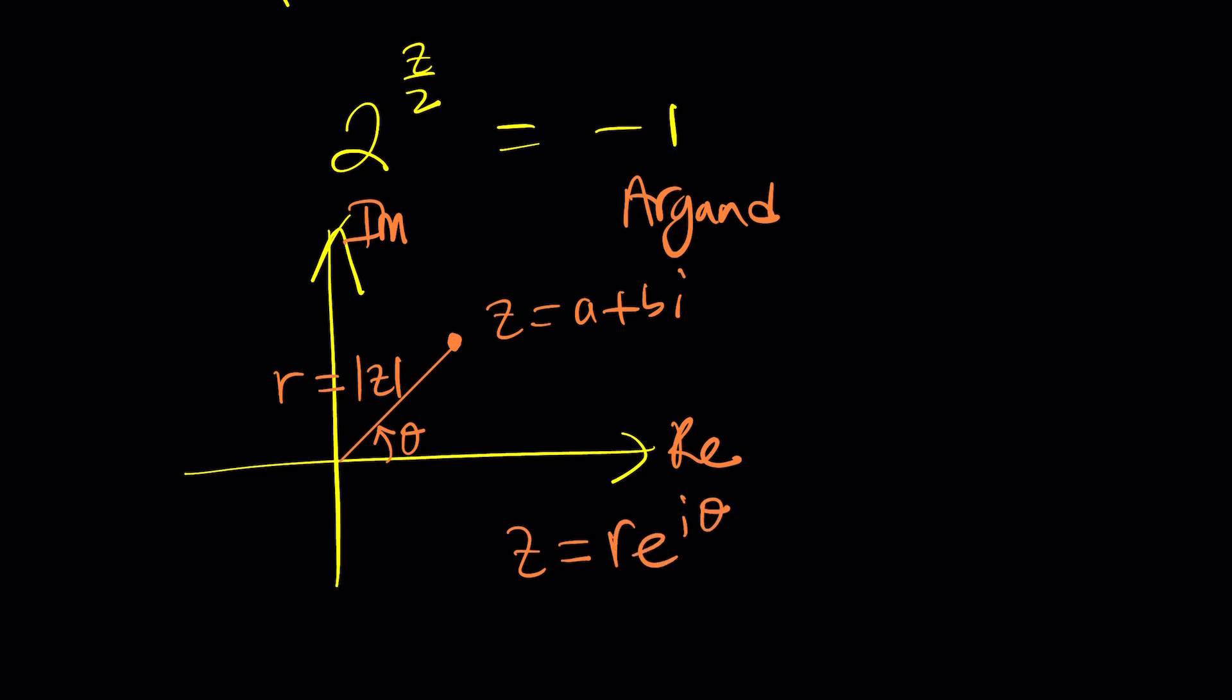Again r is the modulus or the absolute value and theta is the argument. So you need to have two pieces of information. But how do you graph or plot z equals a plus bi? Easy. Just like a point a comma b, and in the first quadrant things are a little easier. If b is zero then you have a real number. If a is zero you have an imaginary number.